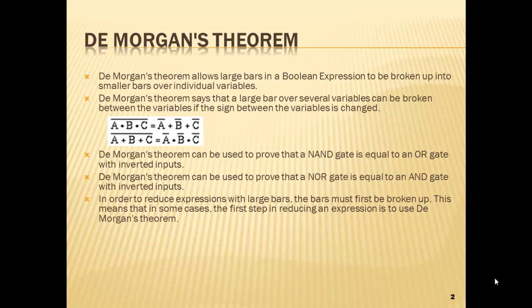De Morgan's theorem says that large bars can be broken into smaller bars over individual variables. That way we can work with individual variables instead of the things underneath them. We really can't do anything with them if the bar goes over multiple variables, so we have to break those up.